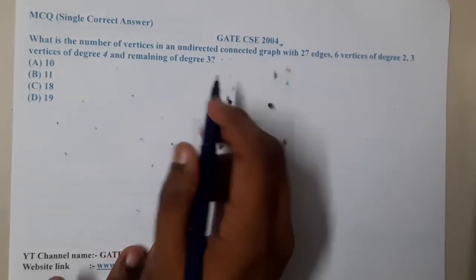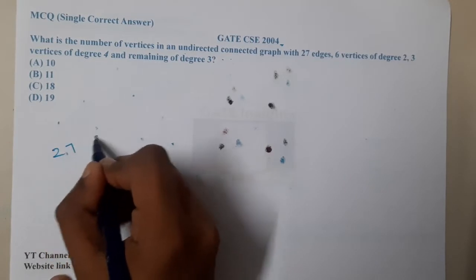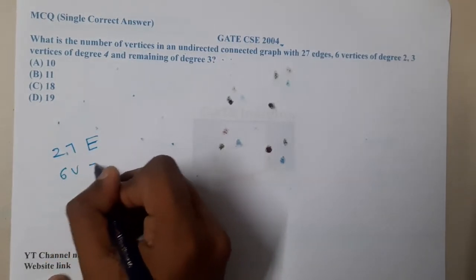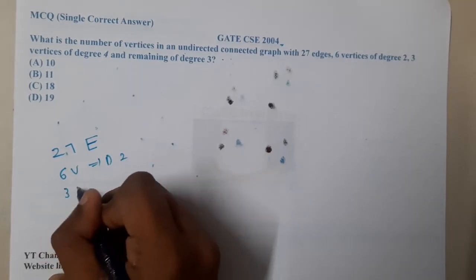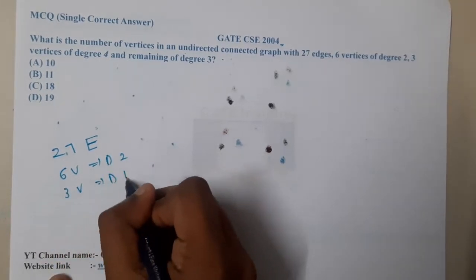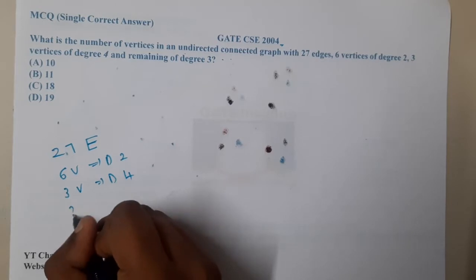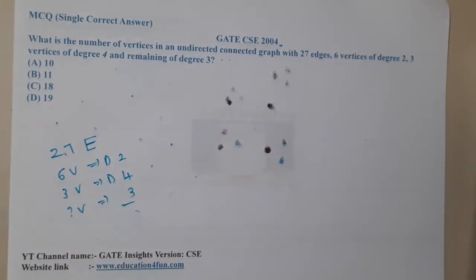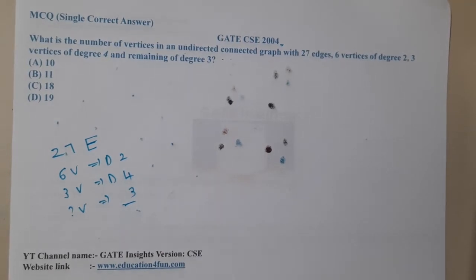The given question is: What is the number of vertices in an undirected connected graph with 27 edges, 6 vertices with degree 2, 3 vertices with degree 4, and the remaining vertices are of degree 3? They are asking for the total number of vertices. This seems to be an interesting question.